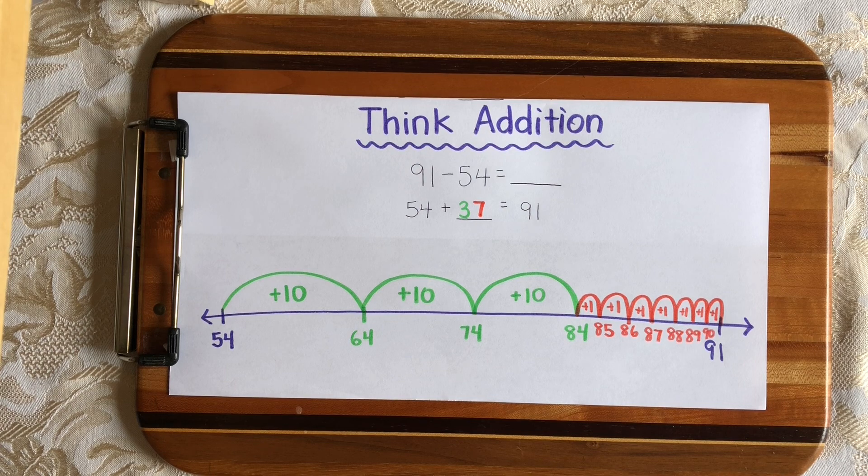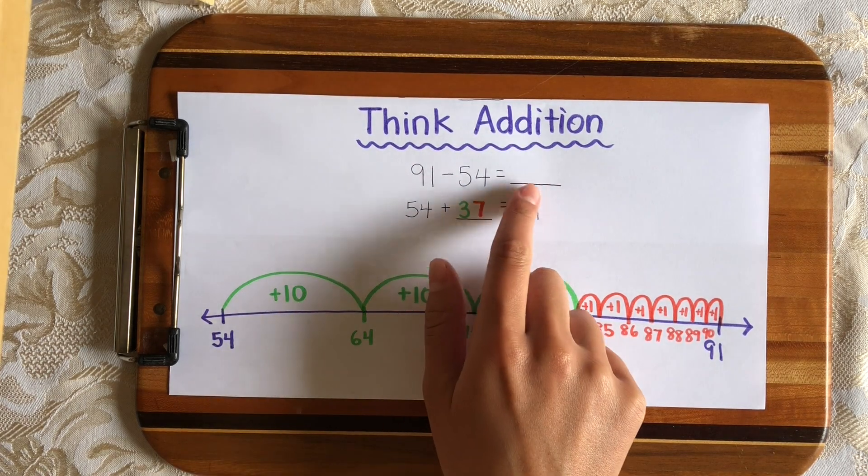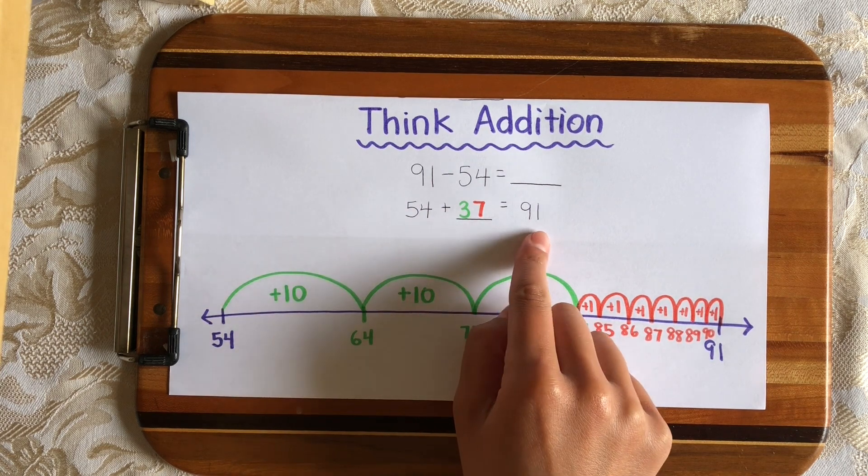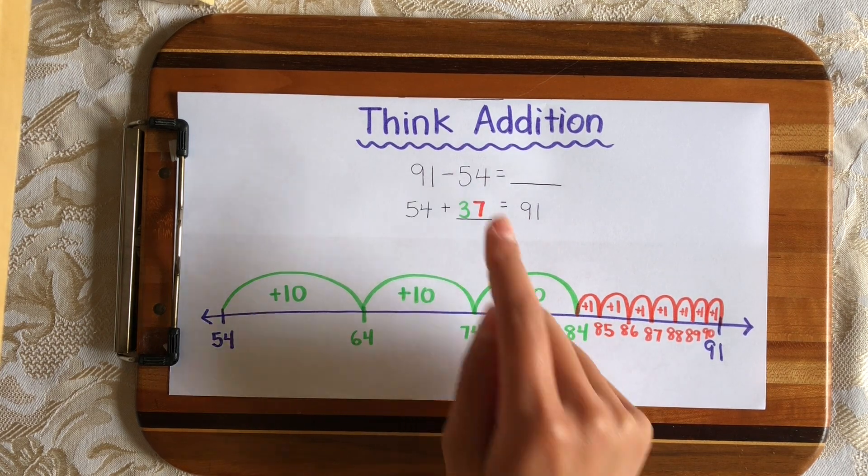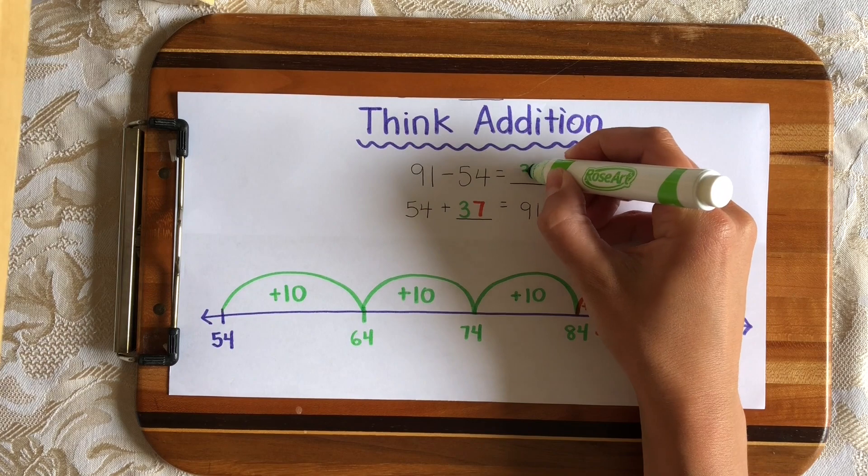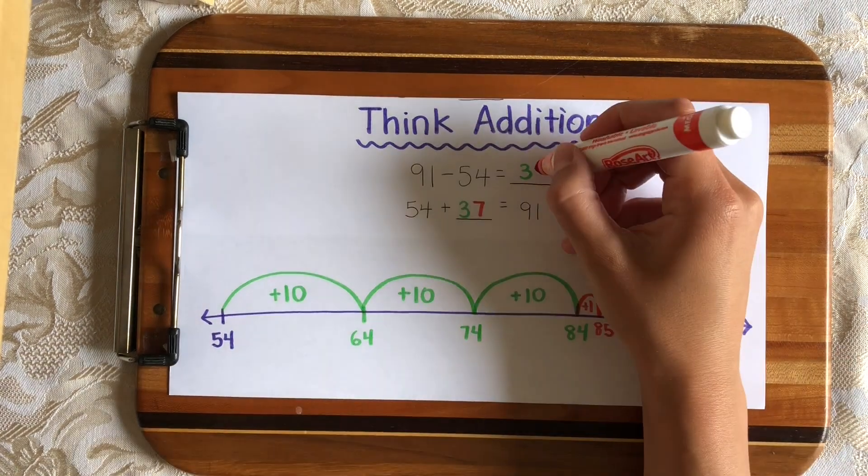And since subtraction and addition are related, since we just switched this sentence around and wrote it as an addition sentence, 91 minus 54 is also 37 because that's a fact family.